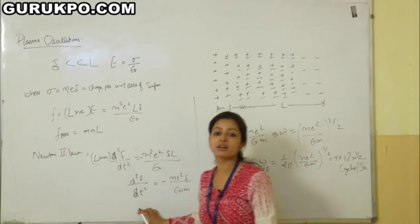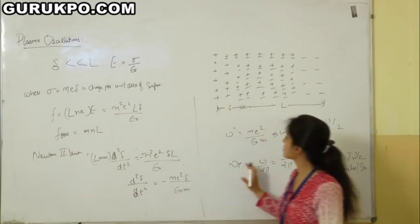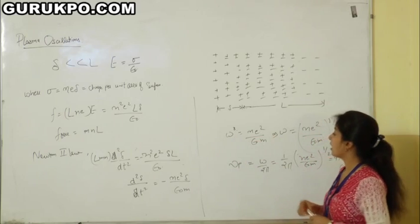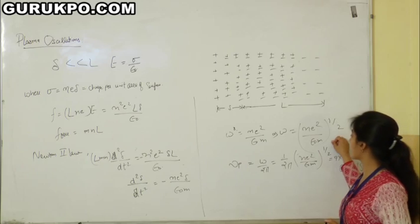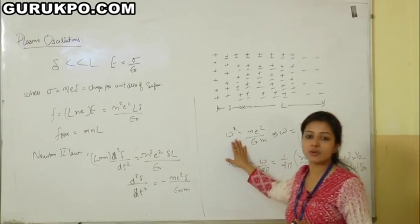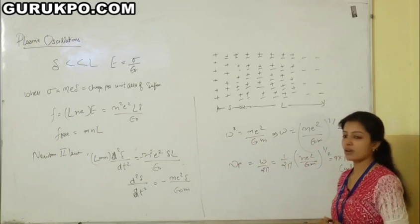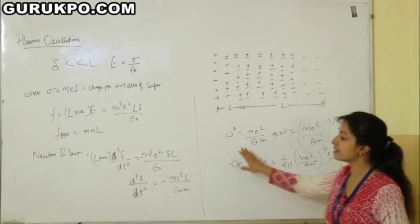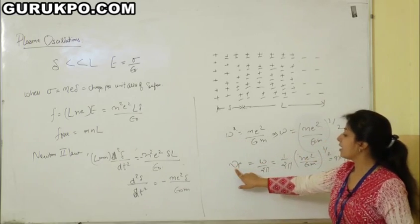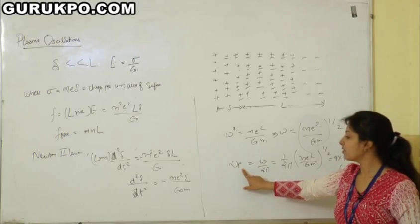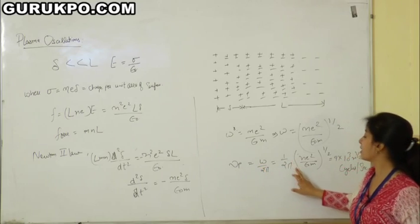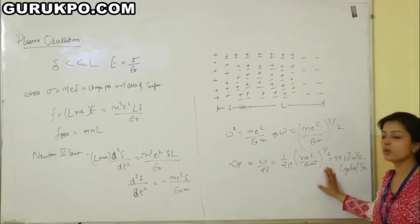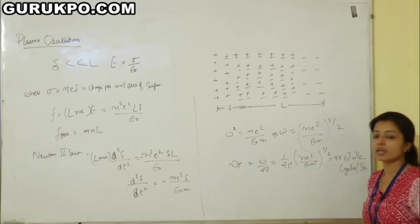This is the differential equation of oscillatory motion. The solution gives omega² equals n·e² upon epsilon naught·m, and omega equals the square root of n·e² upon epsilon naught·m, where omega is the angular frequency. The plasma frequency mu_p equals omega upon 2pi, that is (1/2pi) times the square root of n·e² upon epsilon naught·m, which after calculation equals 9 × 10³ times the square root of n cycles per second.